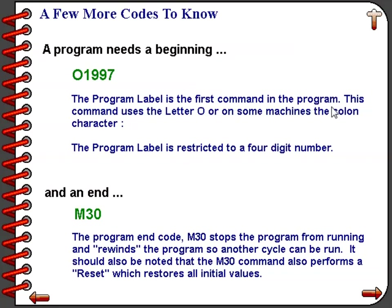At the end of the program is the M30 command — the program end or program stop command. This command will also rewind and reset the memory of the control so that it can run another cycle. So each program will begin with the letter O and end with an M30.